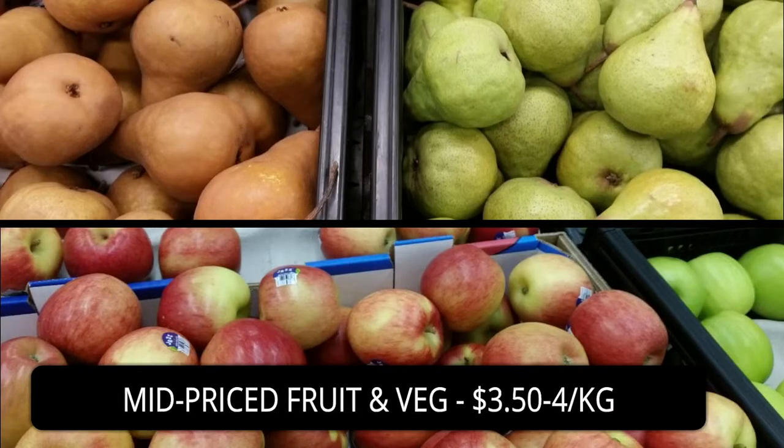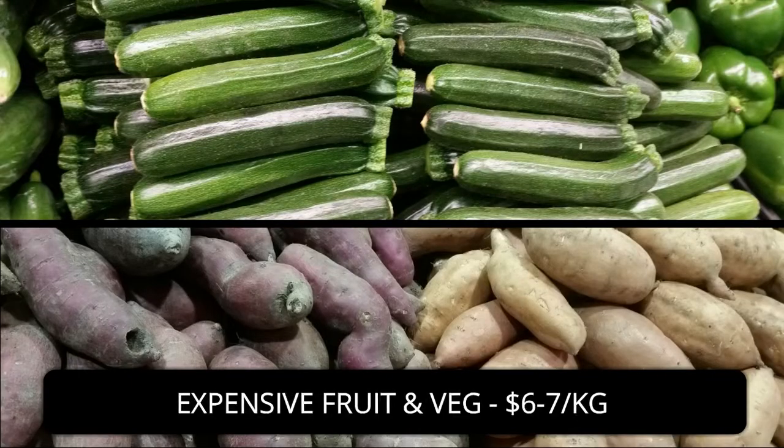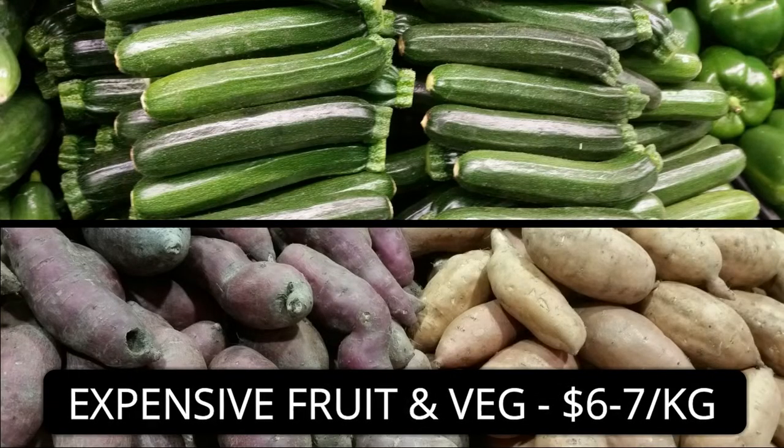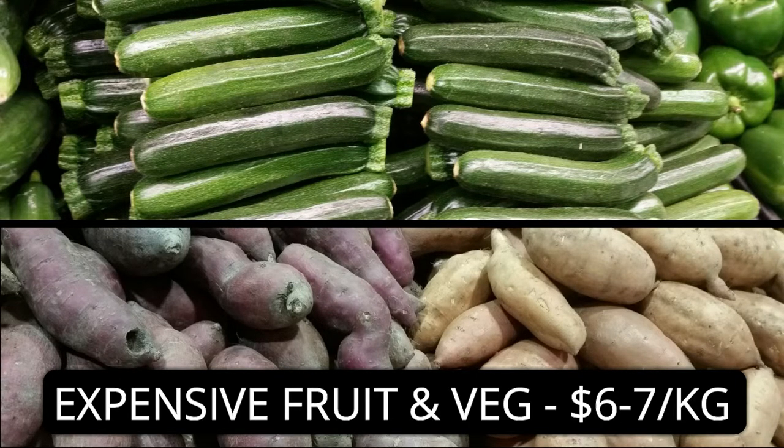Many everyday fruits such as pears and apples are around $3.50 to $4.00 per kilogram. And more expensive vegetables are things such as zucchini or sweet potato, which is called kumara here, which can sometimes get up to $6.00 to $7.00 per kilo.